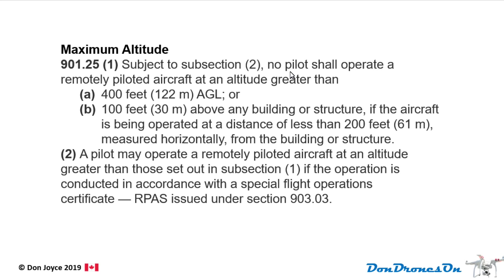Subject to subsection 2, no pilot shall operate a remotely piloted aircraft at an altitude greater than: (a) 400 feet or 122 meters above ground level, or (b) 100 feet or 30 meters above any building or structure if the aircraft is being operated at a distance of less than 200 feet or 61 meters measured horizontally from the building or structure. Subsection 2 says a pilot may operate at an altitude greater than those set out in subsection 1 if the operation is conducted in accordance with a special flight operation certificate — SFOC — issued under section 903.03.